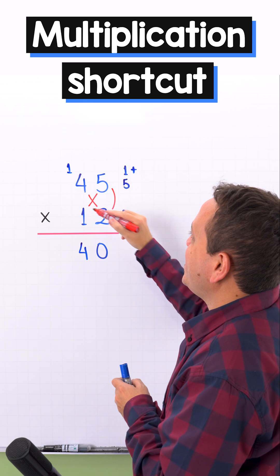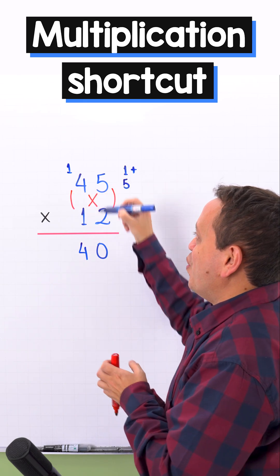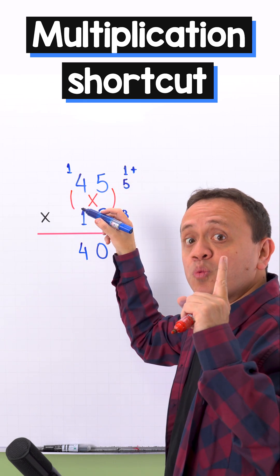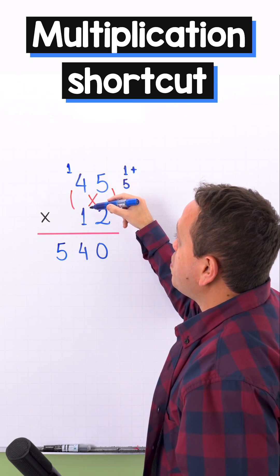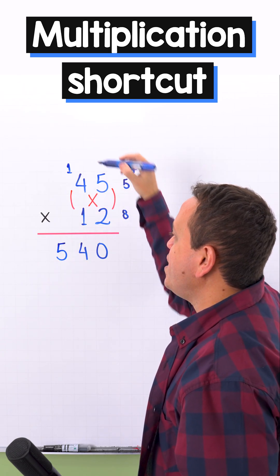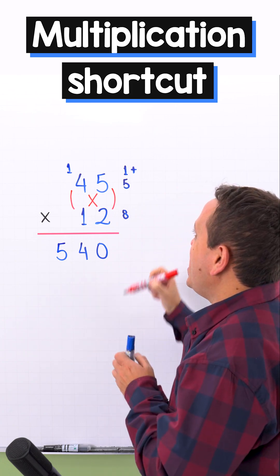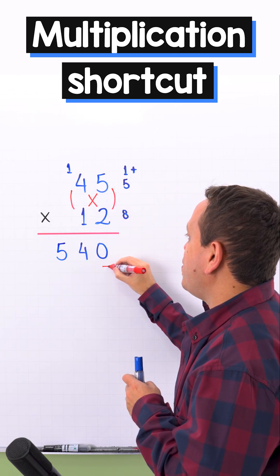Finally we just need to multiply the digits on the left side. And 4 times 1 give us 4. Plus 1 that we carry it over give us 5. In that way, 45 times 12 give us 540.